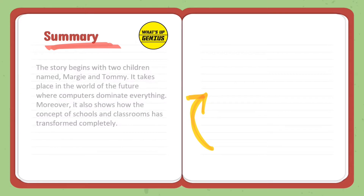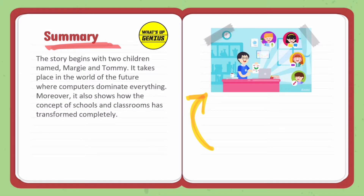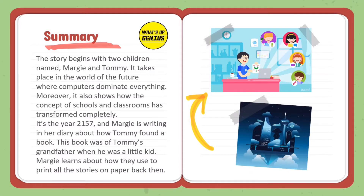The story begins with two children named Margie and Tommy. It takes place in the world of the future where computers dominate everything, and it also shows how the concept of schools and classrooms has completely transformed. It is the year 2157, and Margie is writing in her diary about how Tommy found a book — a book that belonged to Tommy's grandfather when he was a little kid. Margie learns about how they used to print all the stories on paper back then.